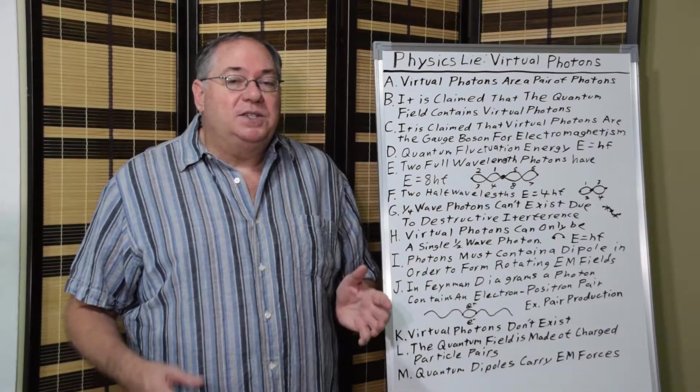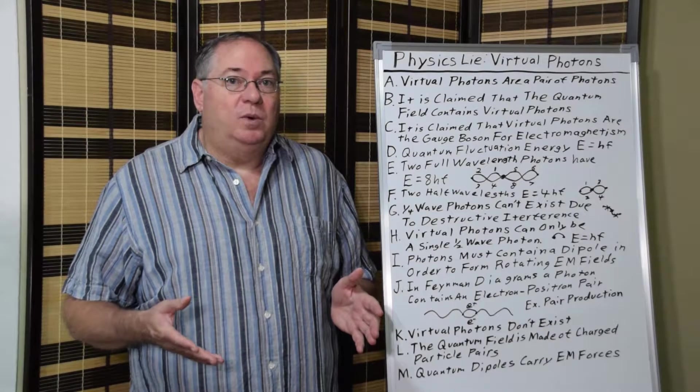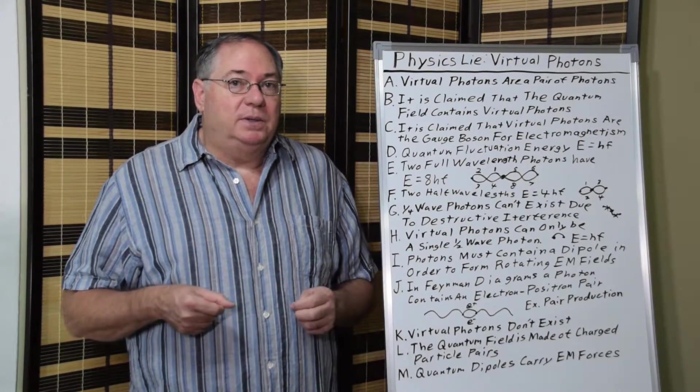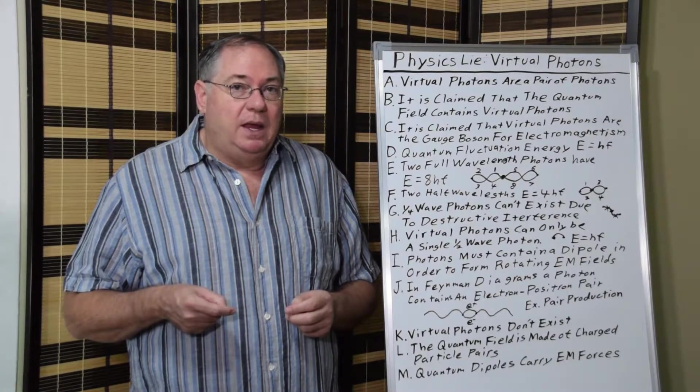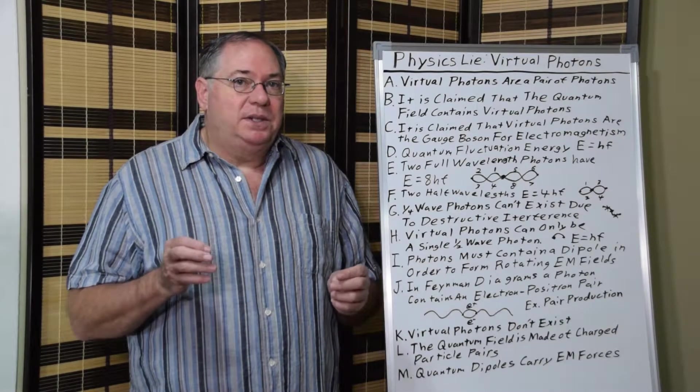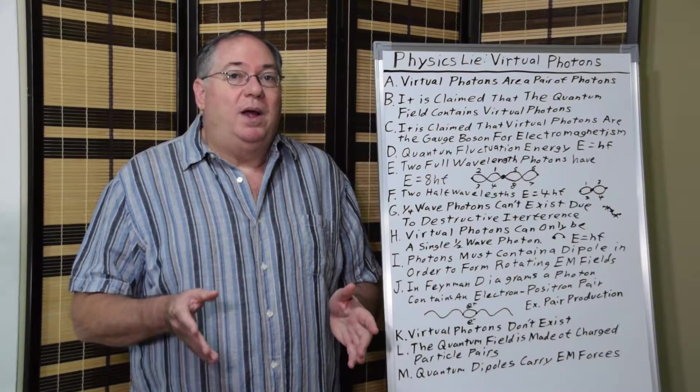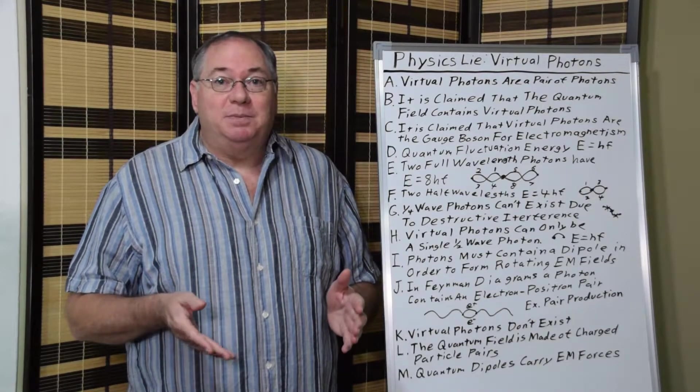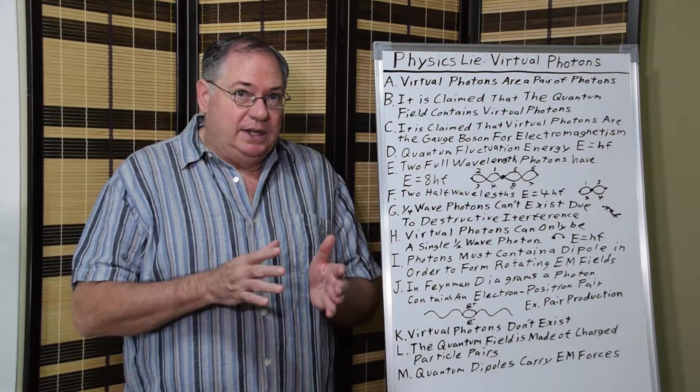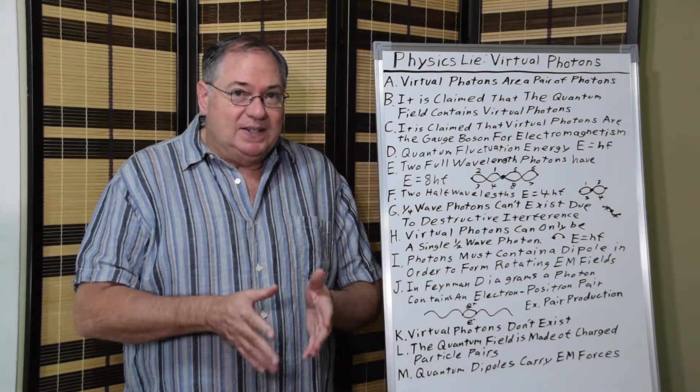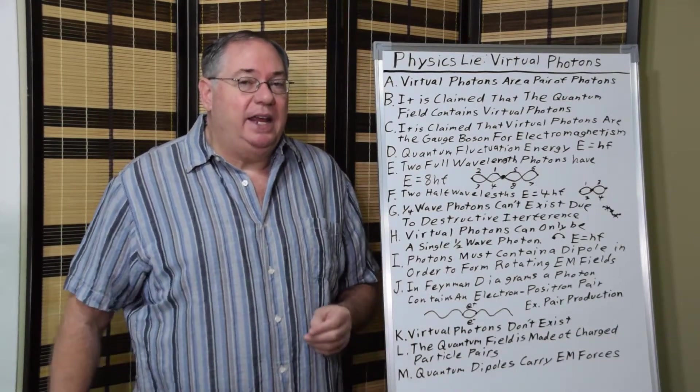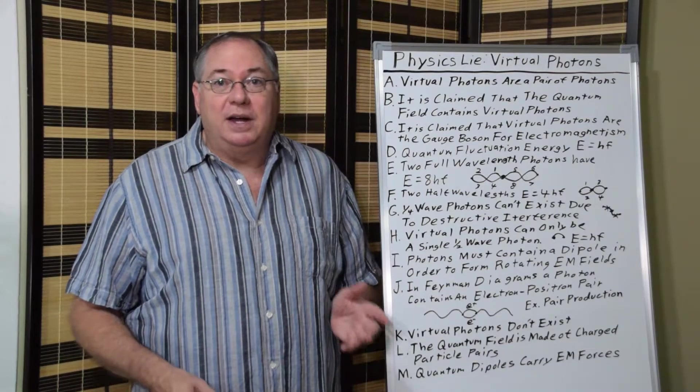This is also the same energy that you would have in the Heisenberg uncertainty principle. Planck gave us the minimum energy that quantum fluctuation can have, while Heisenberg gave us the maximum, which tells us that a quantum fluctuation is exactly this energy, E equals HF. It can't be higher and it can't be lower.